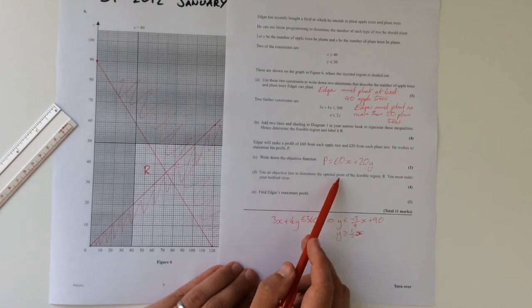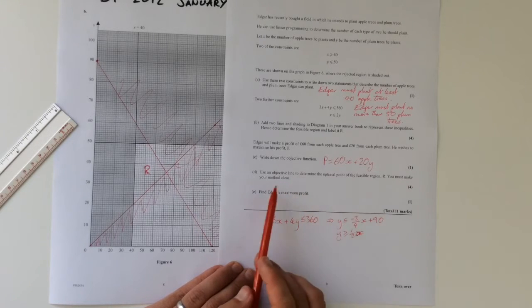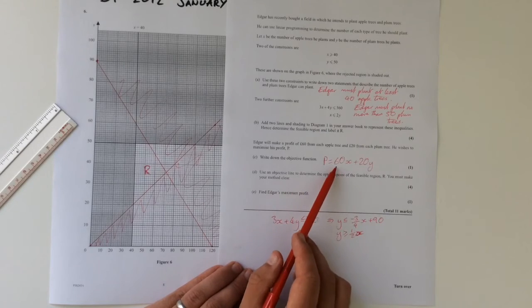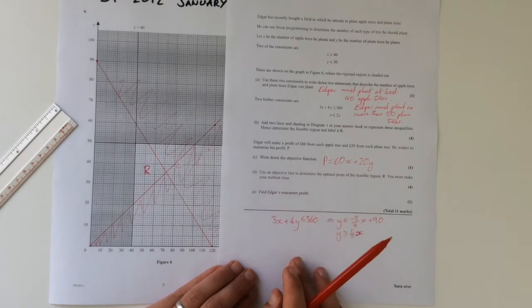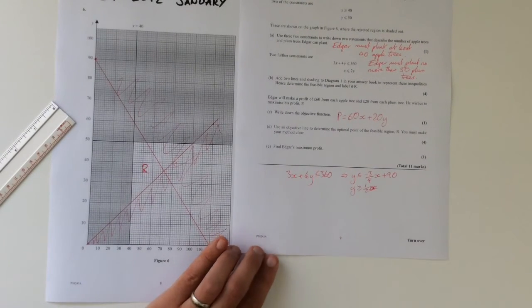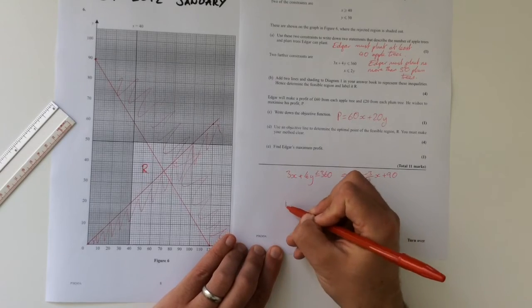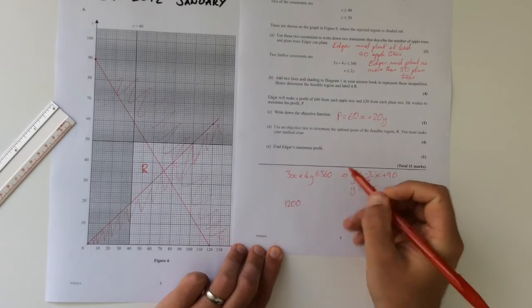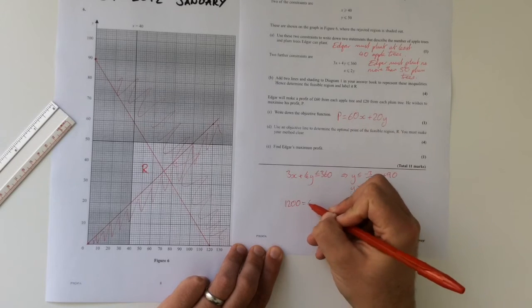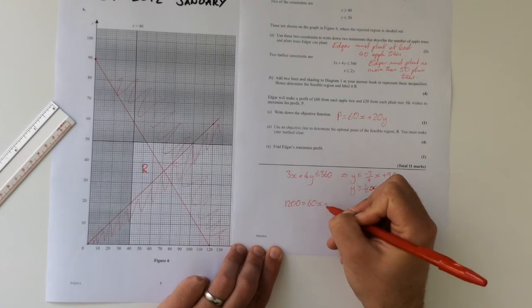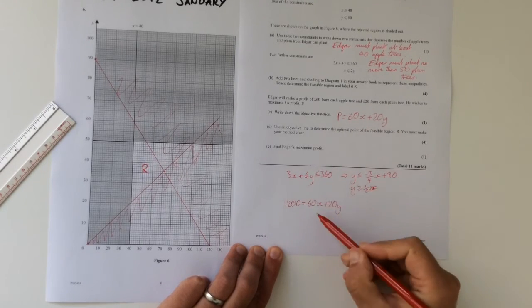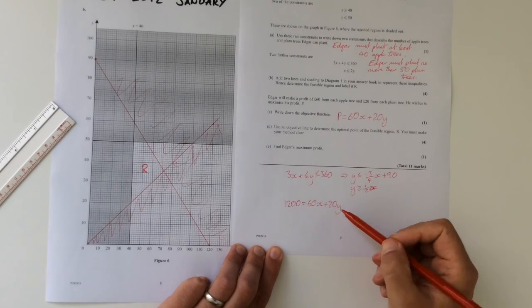Use an objective line to determine the optimal point of the feasible region R. You must make your method clear. So, this is going to be our function that we're working with. What I'm going to do is choose a value for p. I'm going to choose 1200, because that is a number that both 60 and 20 go into.